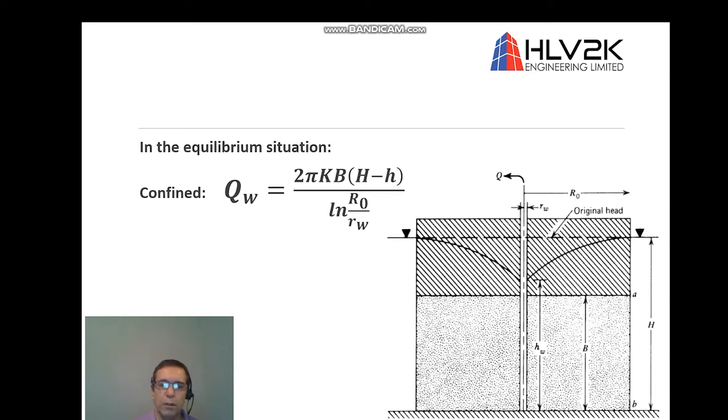We have two different equations. One is for confined aquifers. As you can see in the figure, the confined aquifers assume to have constant saturated thickness B. The capital H is the original groundwater head and small h is the intended groundwater head after dewatering. The capital R is the radius of influence and small r or r_w is the radius of the well.